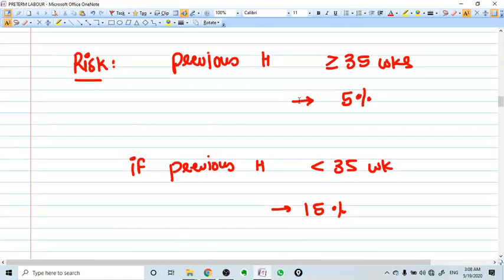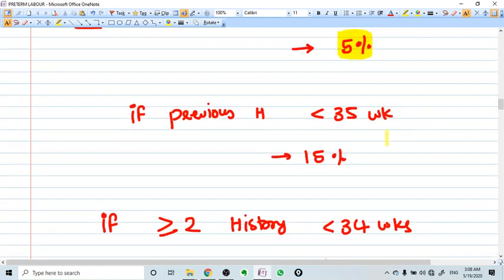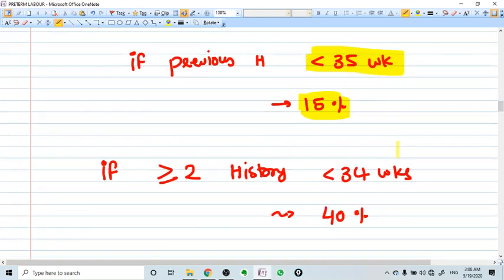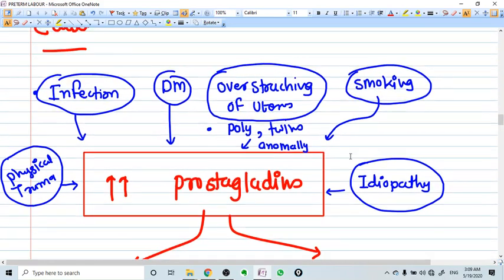The risk of preterm labor in present pregnancy depends on previous history. If previous history of preterm labor more than 35 weeks, then the risk is 5 percent in this pregnancy. If previous history of preterm labor less than 35 weeks, then 15 percent is the risk. If more than 2 preterm labors less than 34 weeks in previous pregnancies, then it's a very high risk pregnancy with 40 percent risk of preterm labor.